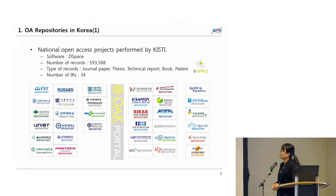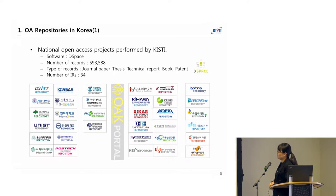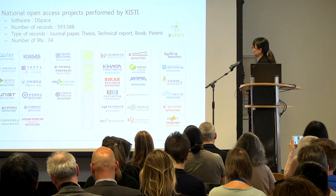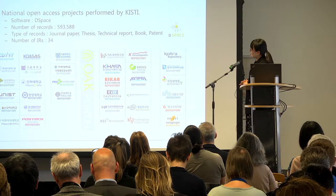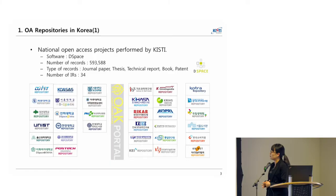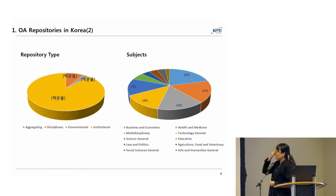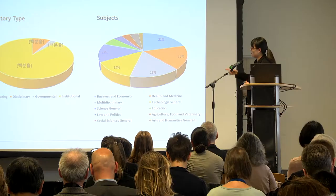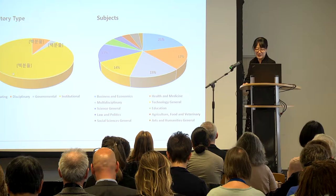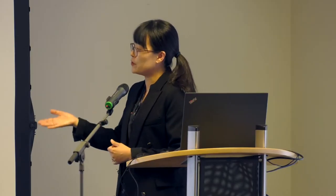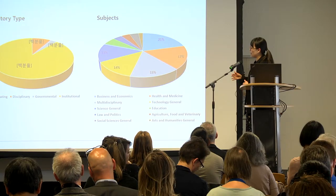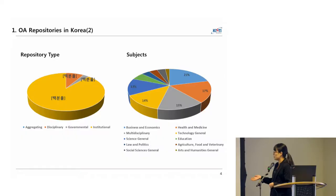We have 34 repositories in Korea, all built by the Open Access Korea project by KISTI. They are using this base for almost 600,000 journal papers, theses, and technical reports through the repositories. According to OpenDOAR, most of the repositories are institutional ones and we don't have any aggregating system yet. The main subjects of our Open Access sources are business and economics, and health and medicine.